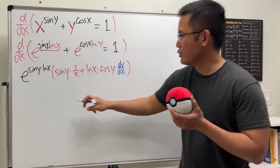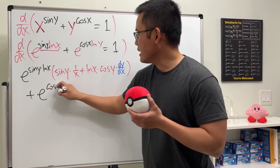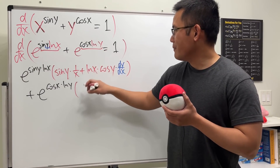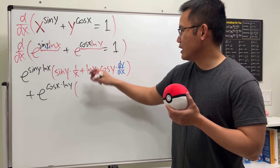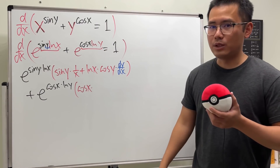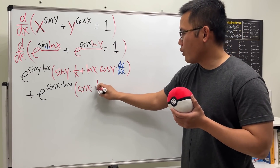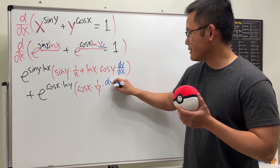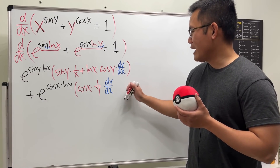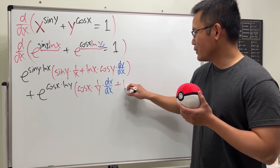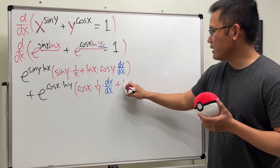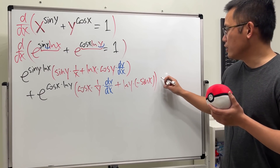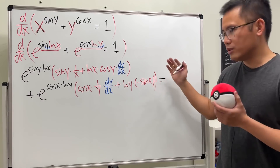For the second term, we differentiate e^(cos x · ln y) similarly. We get e^(cos x · ln y) times the product rule applied to cos x · ln y: keep cosine x and multiply by the derivative of ln y, which is (1/y)(dy/dx). Then add ln y times the derivative of cosine x, which is negative sine x. All of this equals the derivative of 1, which is zero.